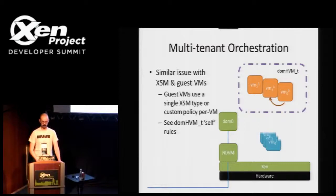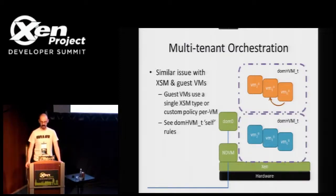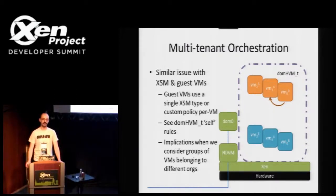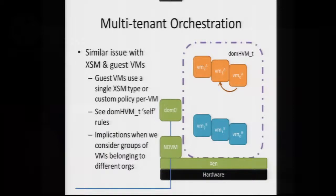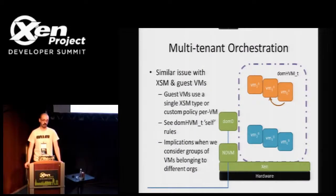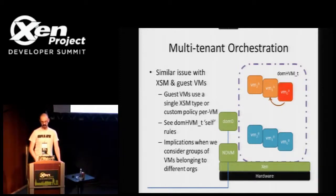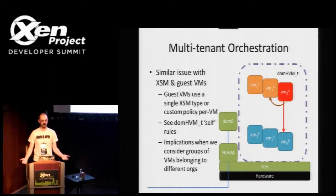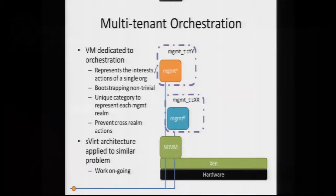When another request comes in over the wire from a different organization and they spin up another collection of VMs, these would just be standard HVM types in the XSM policy — meaning they're in the same security context. This has specific implications if the organizations don't trust each other explicitly or don't even know about each other. If you were to tell an organization that things operating in the same security context have the ability to affect each other, that's not so bad if it's your own VMs — but what about the other organization's VMs? No one ever tells you the possibility for interference from other virtual machines exists, but it's a very real thing.